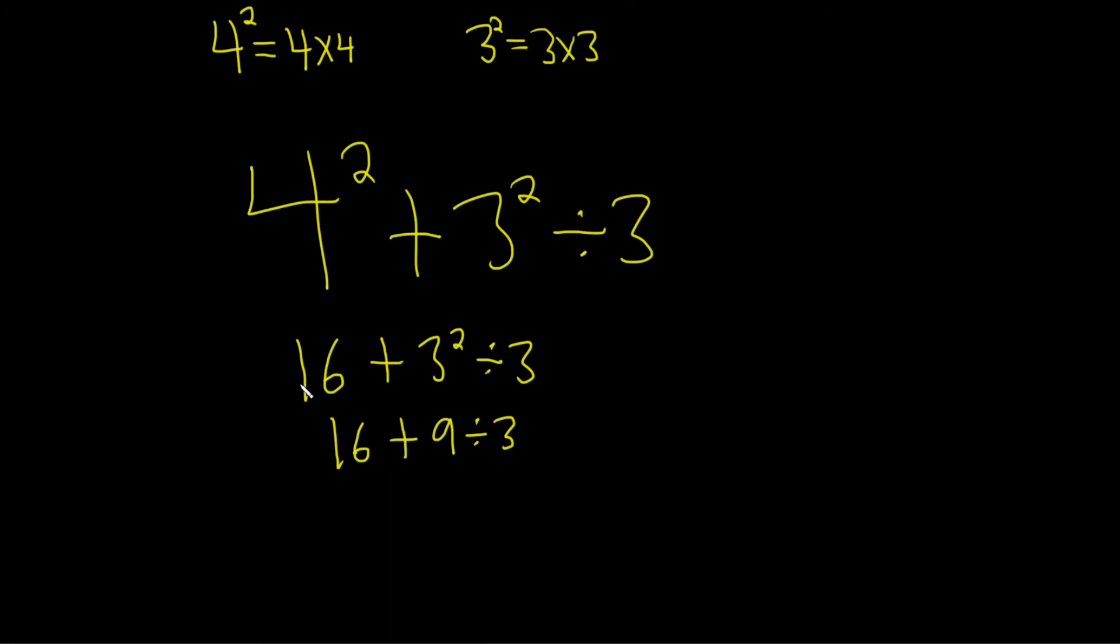So step 1, we got the 16, wrote the rest down. Step 2, we got the 9, wrote the rest down. Now we do this division. So that 16 is still there. It's still hanging out. 9 divided by 3 is 3.